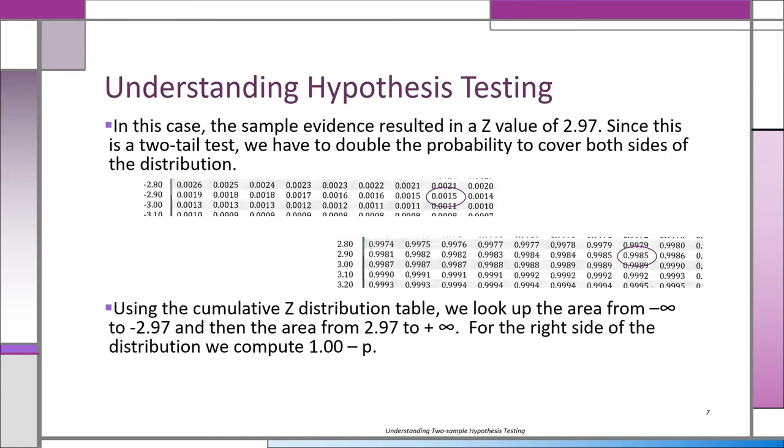If you look at the cumulative z-distribution table, you can see it gives you the values from 2.97, that's our z-value, to infinity. We're not only looking at the difference of 9.4 in our sample, but also more than 9.4. We're looking at differences like 10.4, 15.4, 20.4, or 50.